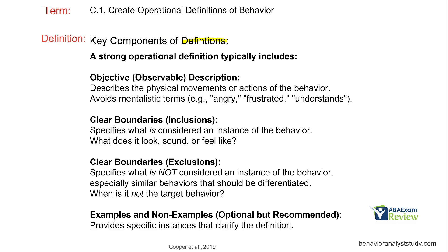More key components of definitions. This is where it all begins — if you don't have a good operational definition, you're going to have a weaker intervention because you can't trust the data, the observation, or the measurement. A strong operational definition includes an objective, observable description of what's happening; clear boundaries covering inclusions — what counts as an instance of the behavior, what it looks and sounds like; exclusions — what is not an instance of the behavior; and examples and non-examples that clarify the definition.